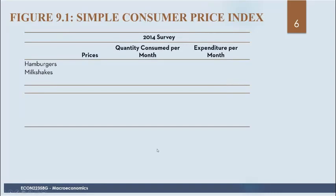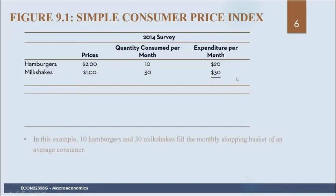Suppose we have an economy where the only two goods are hamburgers and milkshakes. In 2014, we have prices and quantities consumed for each of these two goods. Using this information, we can calculate the cost of this basket of goods by multiplying prices by quantities and taking the sum. In this case, the cost of the basket is $50.